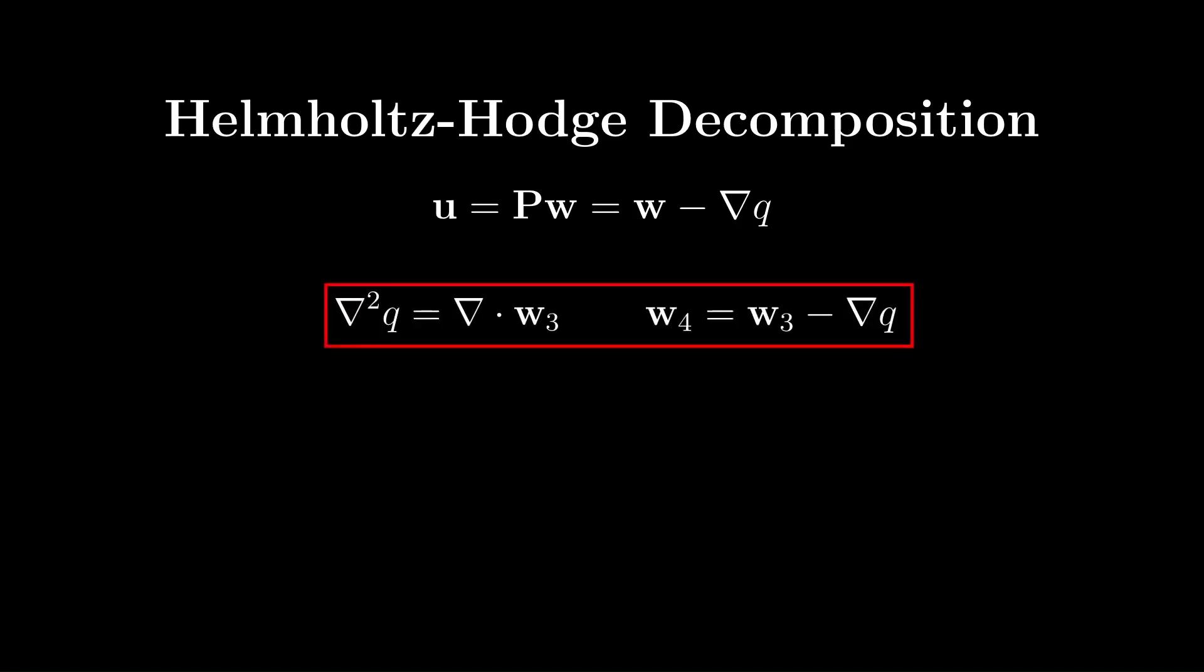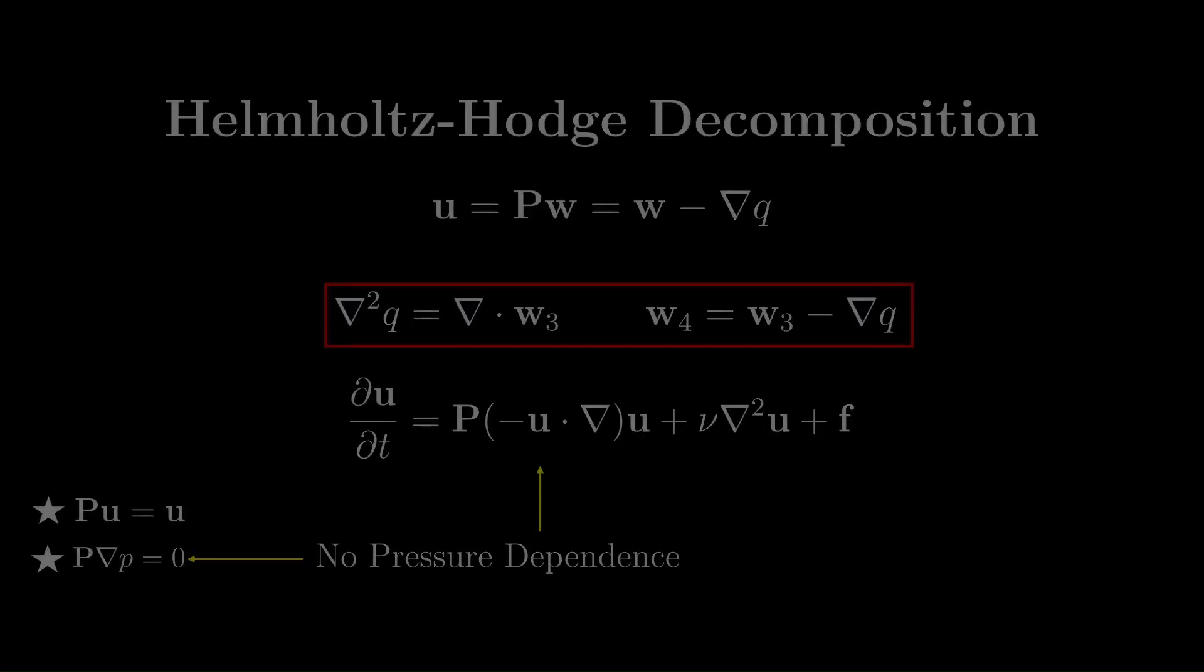Given our velocity from the diffusion step w3, we can project it to determine its divergence-free counterpart w4. Actually, if we perform the projection operator on the entire Navier-Stokes equation, we find that the pressure gradient dependence drops out.